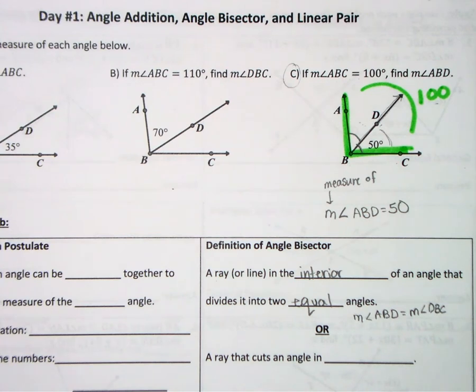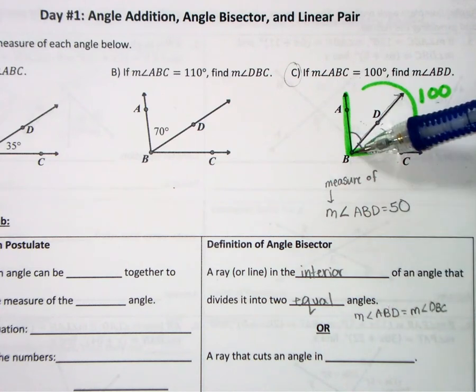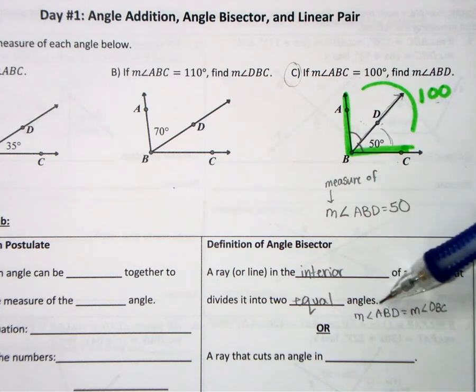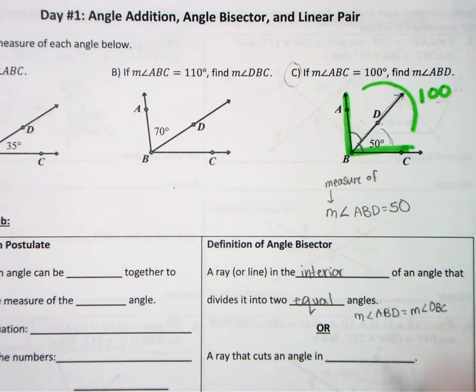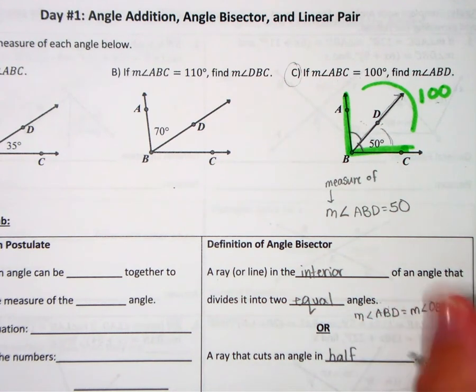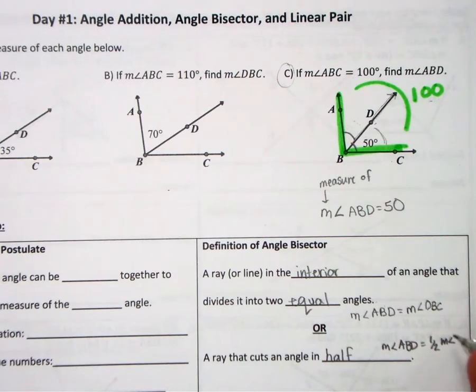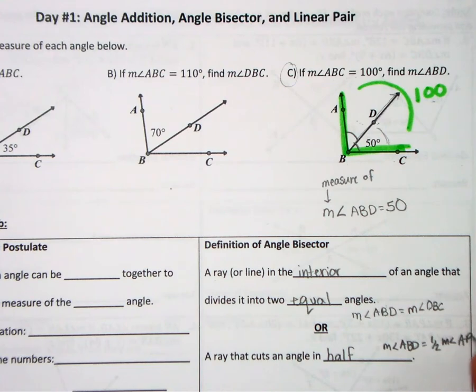Okay, now those angles when you write them—the B does have to be in the middle because that's the vertex, but the two letters on the outside can be switched around. Or it could be defined as a ray that cuts an angle in half. So you could say that the measure of angle ABD is equal to half of the whole angle, so the whole angle is our ABC.